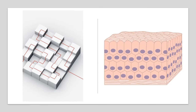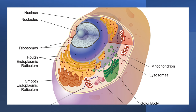Just like bricks form the basic units of a building, the cells form the basic units of a living organism. When you view cells using an electron microscope, you can see that each cell houses a wide variety of organelles that are connected together through intracellular networks.